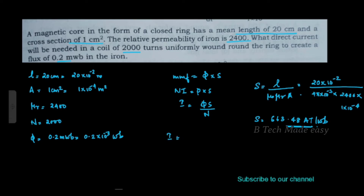Then the current I is equal to φ times S divided by N: that is 0.2 into 10 raise to minus 3 into 663.48 divided by 2,000.